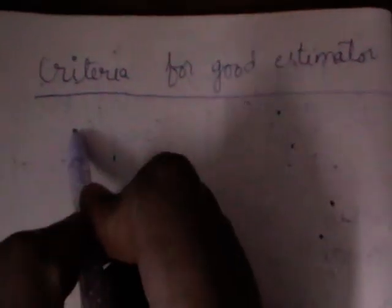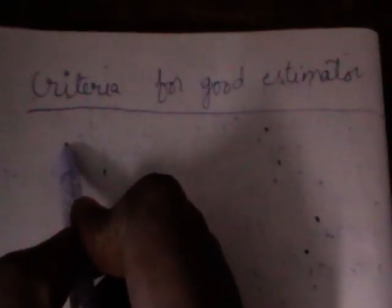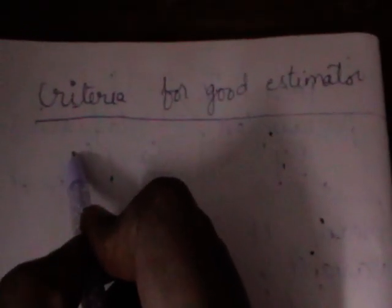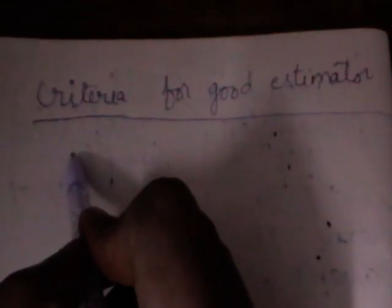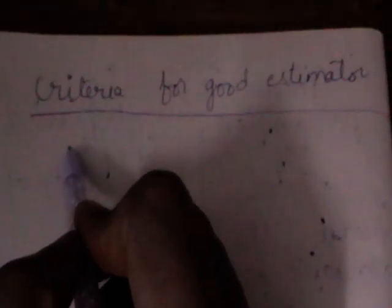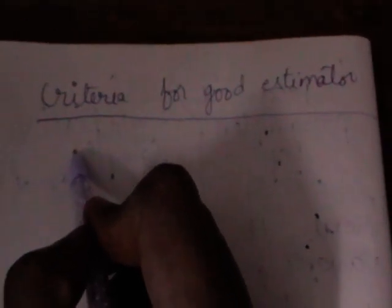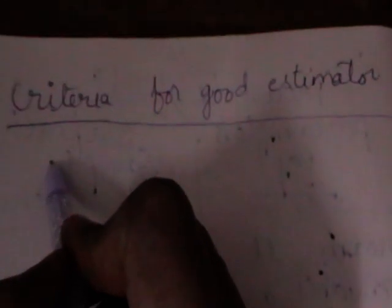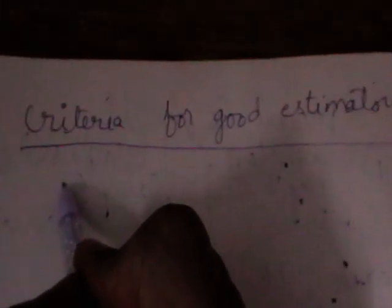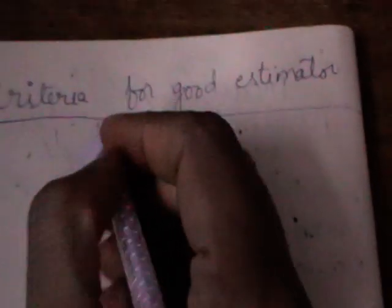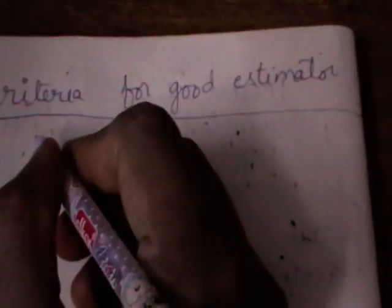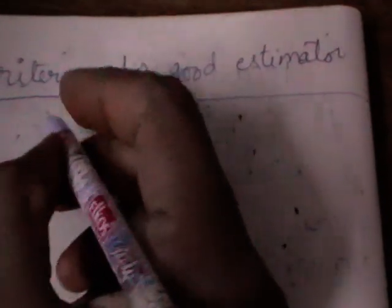We discussed that parameters are always unknown and those can be estimated by statistics. Parameters are nothing but statistical constants of population. Parameters are estimated by corresponding statistics.